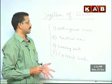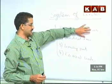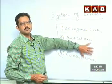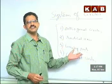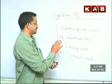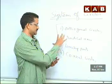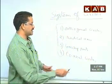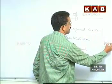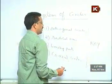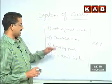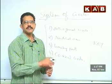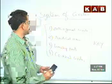Every year they ask one question on orthogonal circles or limiting points. In 2012, the question was on limiting points — a very interesting topic. These are the key concepts: Orthogonal Circles, Radical Axis, Limiting Points, and Co-Axial Circles. If you remember them, that is enough.